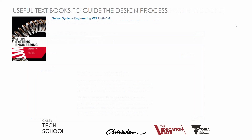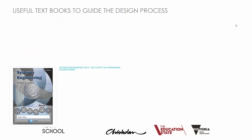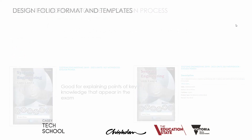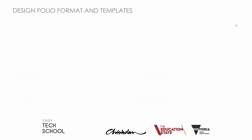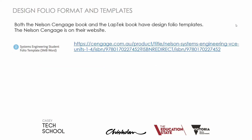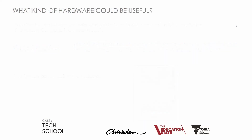Useful textbooks include Nelson Systems Engineering, which has a great chapter on the systems engineering process, and also the Laptech books, which are really good for templates and for explaining key knowledge. There are some folio formats and templates you can use — Nelson Cengage has an online one with a web page listed, and Laptech has a physical one in the book.